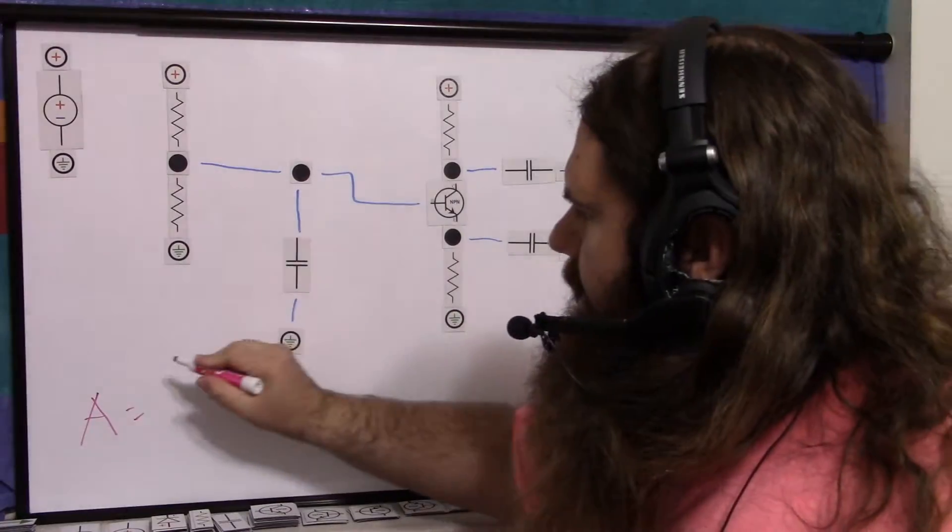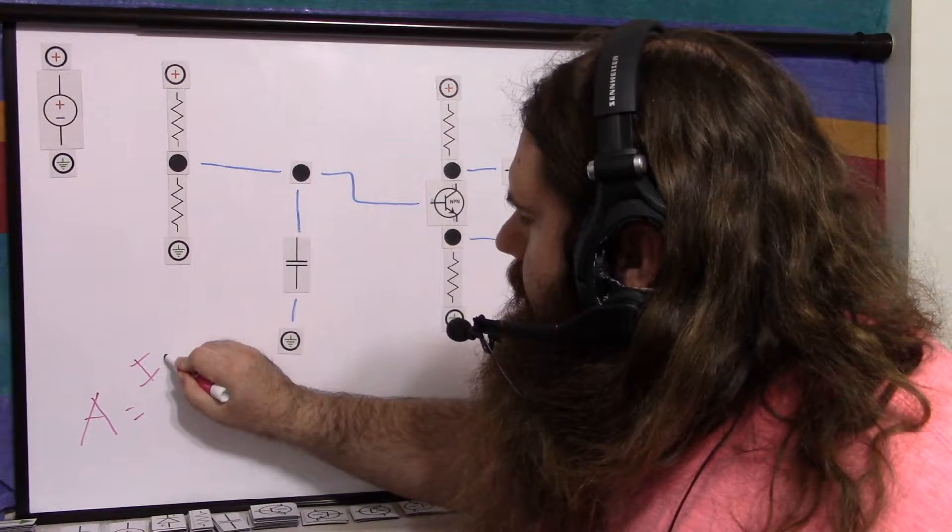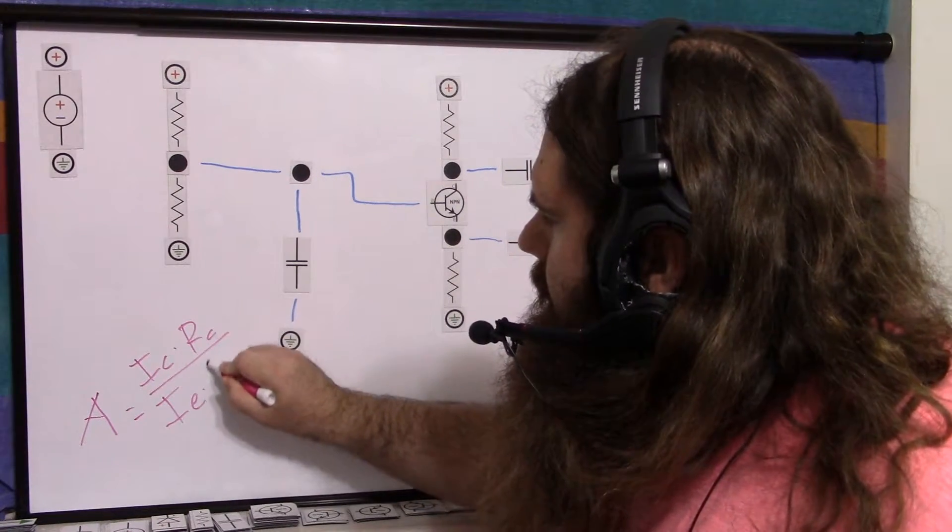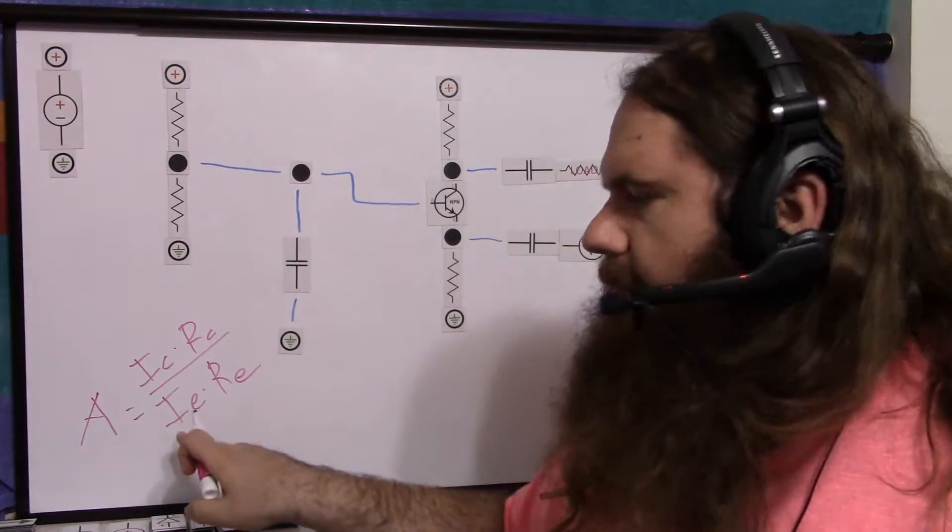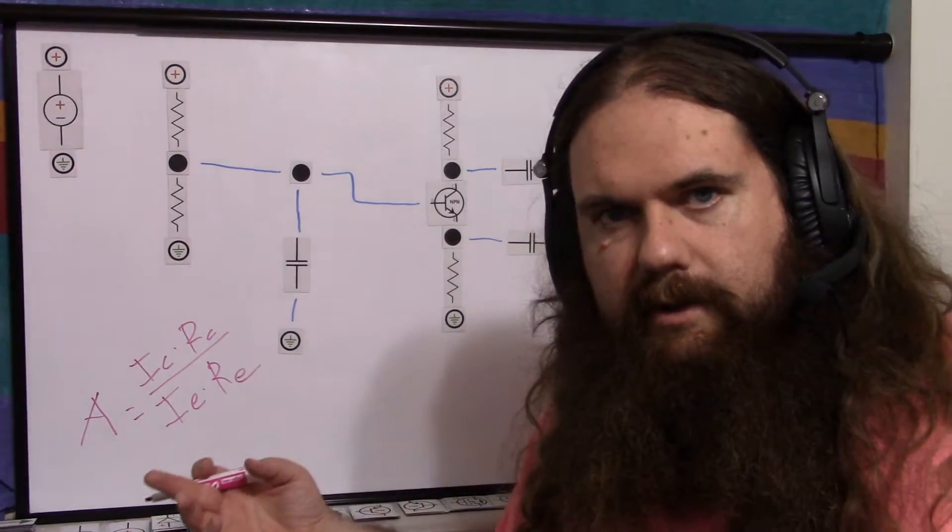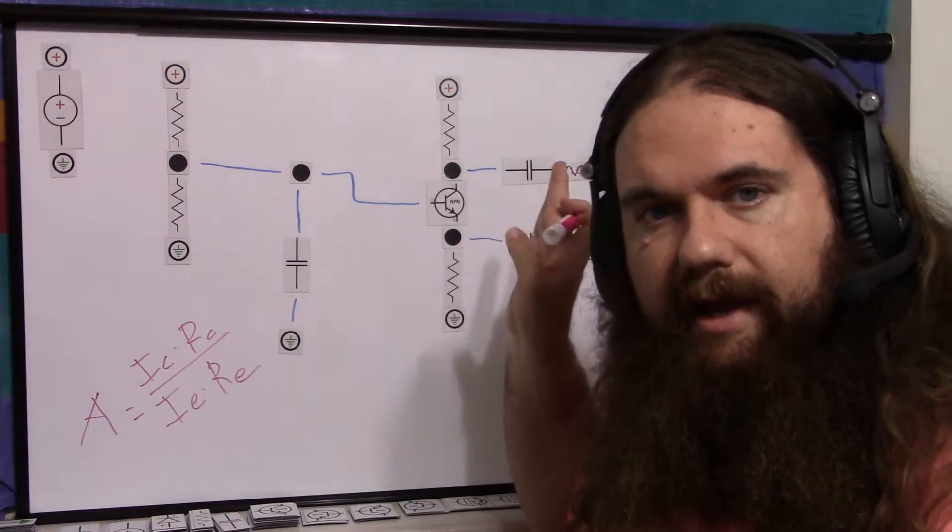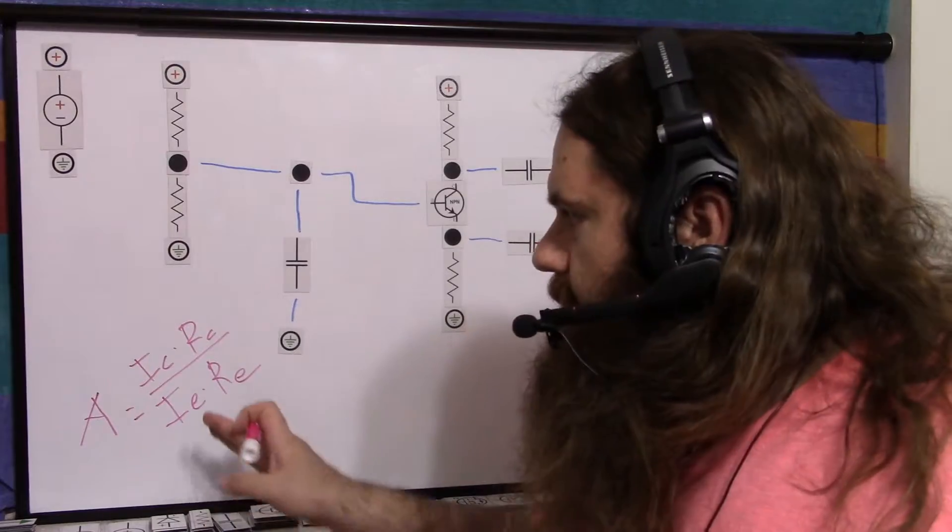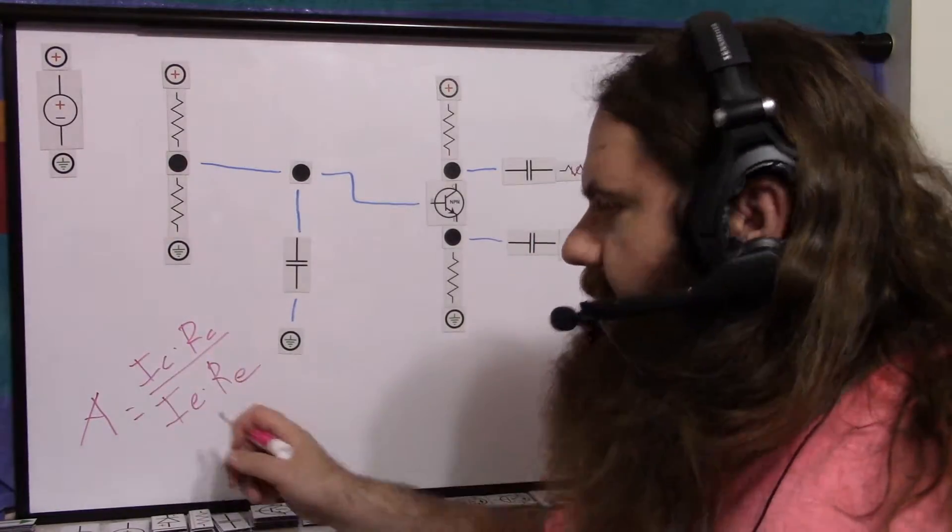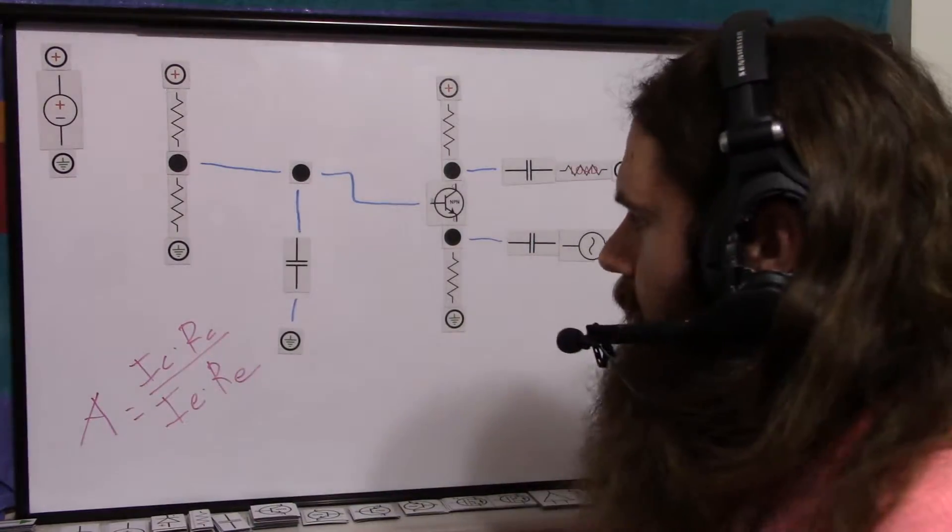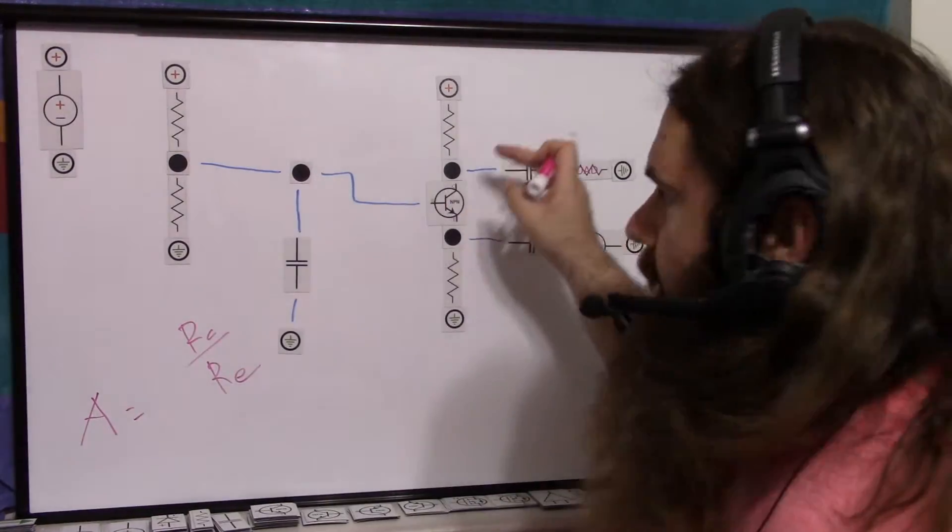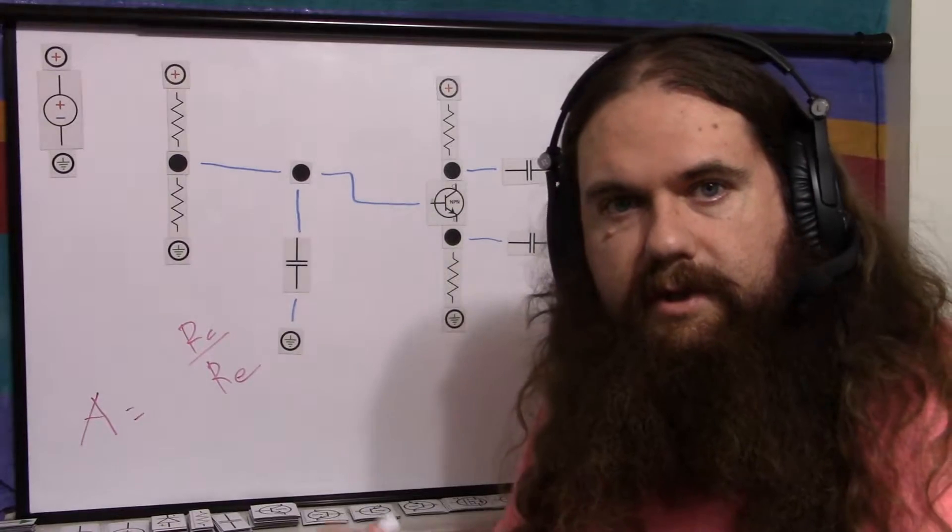And since we have resistance on both ends, we can use Ohm's Law. So it's the current through the collector, resistance at the collector, current through the emitter, resistance at the emitter. But we've already established that the collector and emitter currents are mostly the same. There's very little difference. And the better quality your transistor, the less difference there will be. So the better the parts, the more IC over IE is just one, or almost one. So we could really just take that away. And it's the ratio of the resistances, which is your gain.